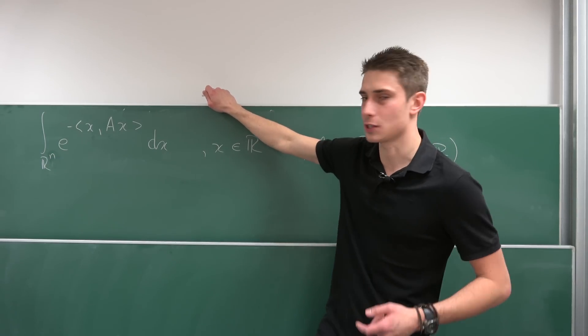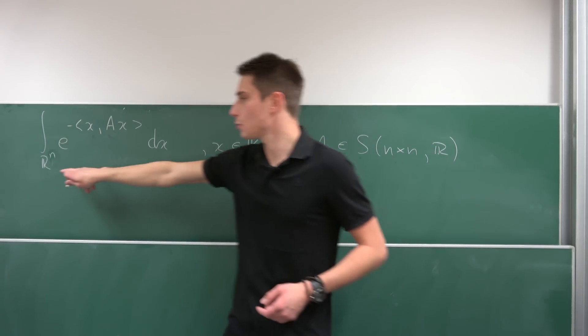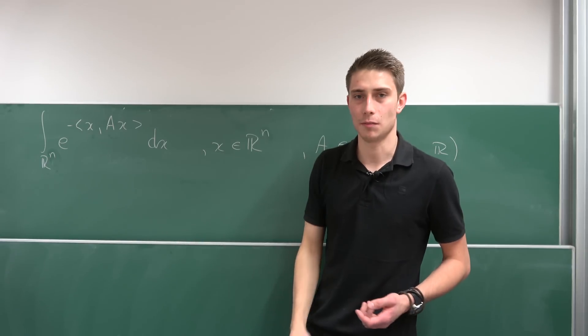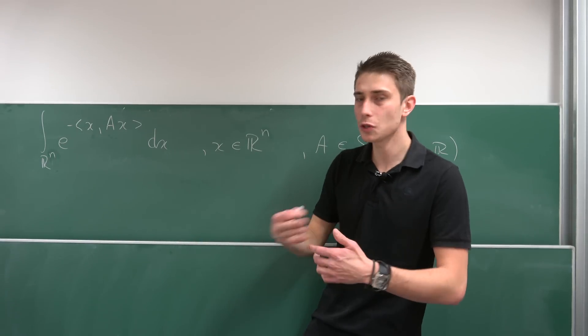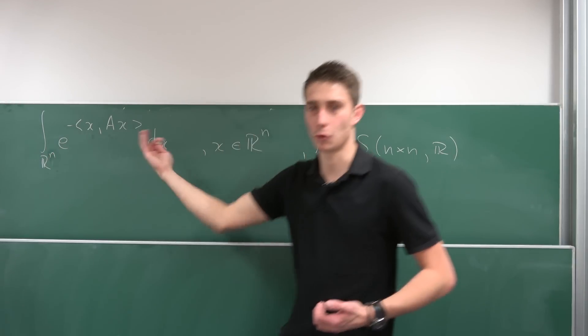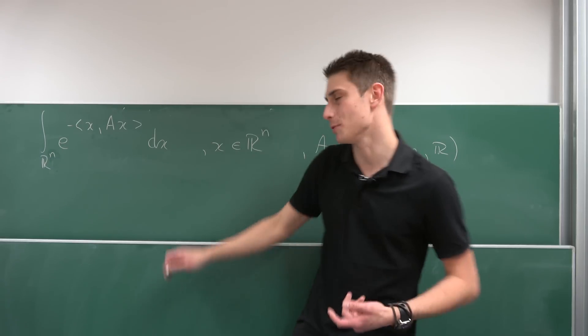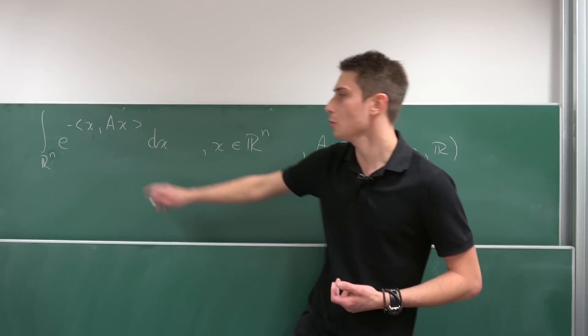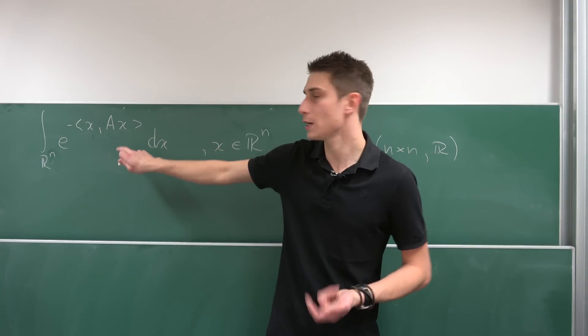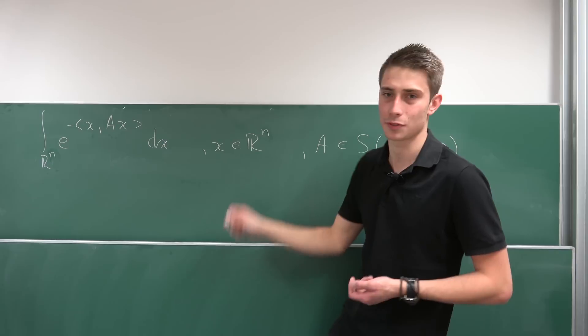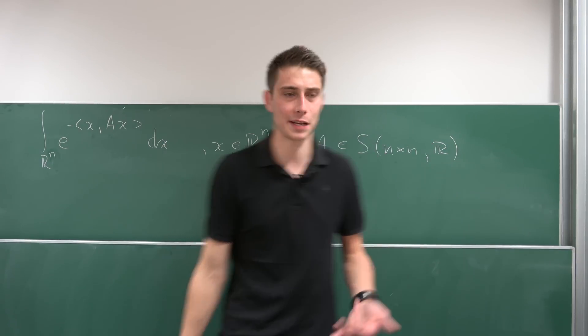So you see, let's talk about this thing right here a little bit. So at first, we are integrating over r to the n, meaning we have n integrals stacked after one another, all from negative infinity to infinity, basically. Also, our factor that we are integrating over, x is out of r to the n, the vector space.